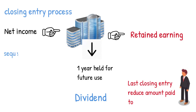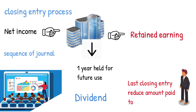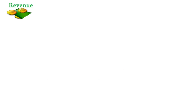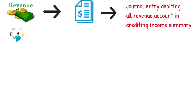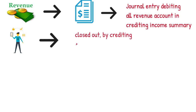There is an established sequence of journal entries that encompass the entire closing procedure. First, all revenue accounts are transferred to income summary. This is done through a journal entry debiting all revenue accounts and crediting income summary. Next, the same process is performed for expenses. All expenses are closed out by crediting the expense accounts and debiting income summary.